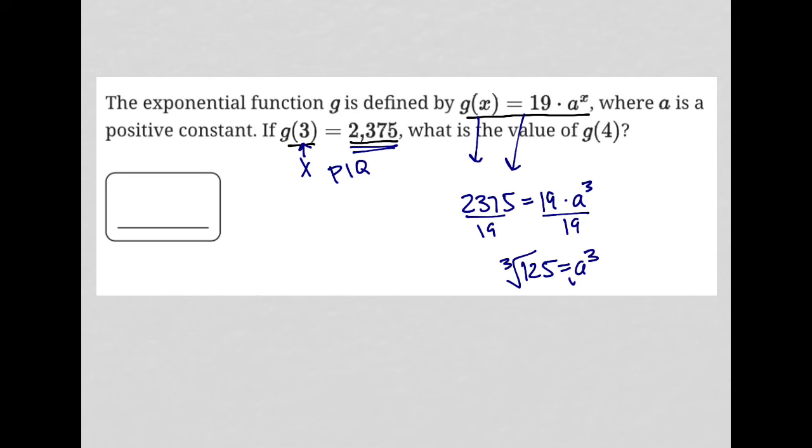I'll cube root both sides because that's how I get this to just be a. That tells me that a is 5, which means g(x) is really 19·5^x. So now I know that a is 5.